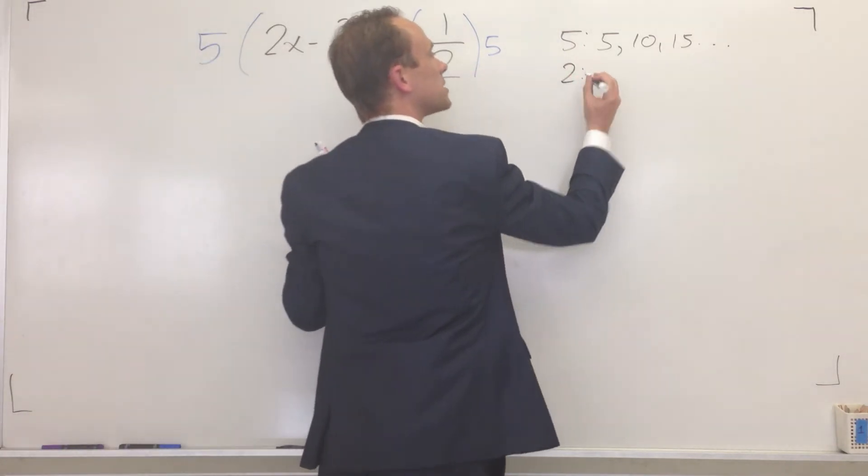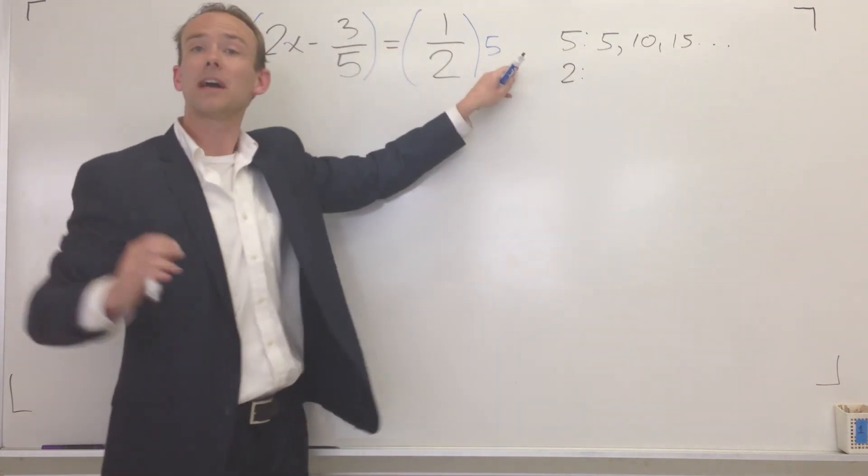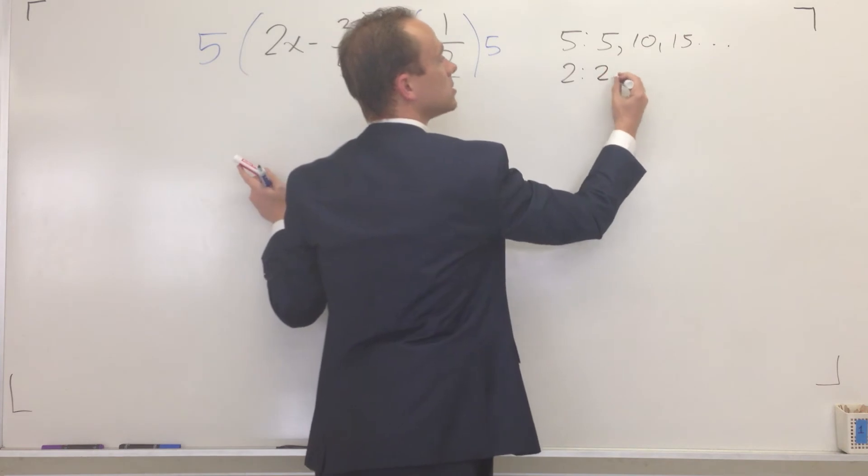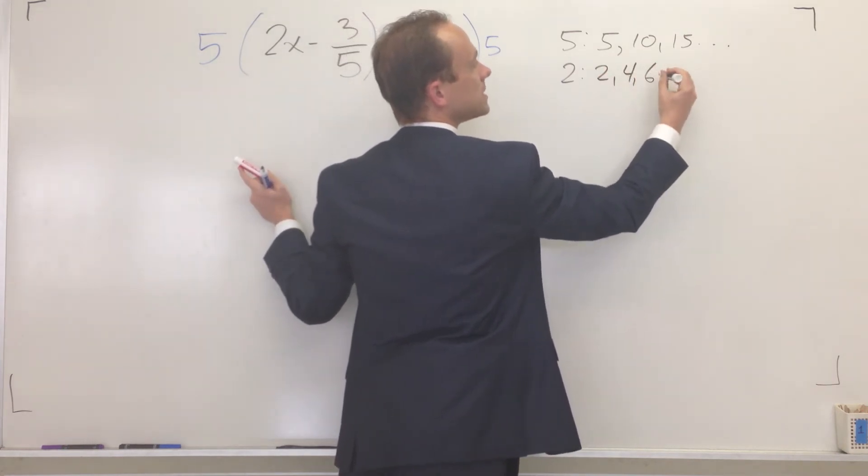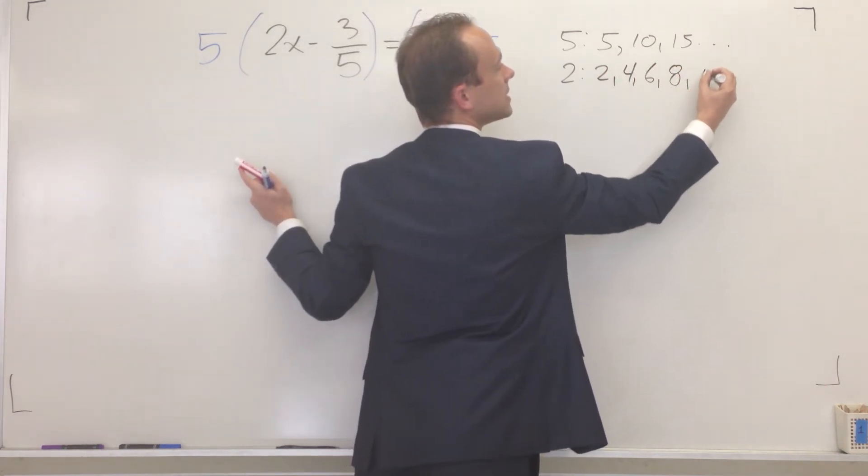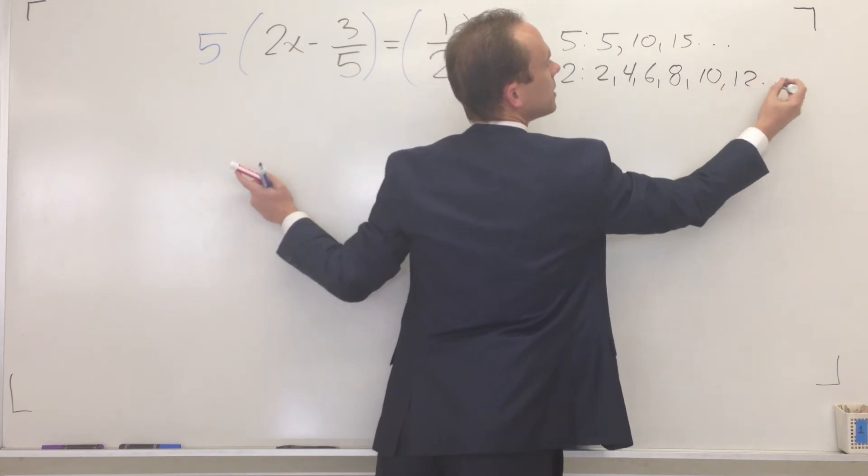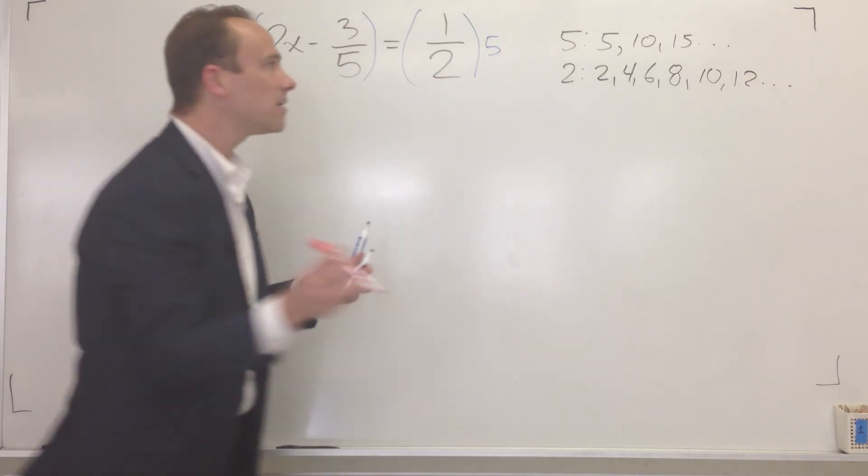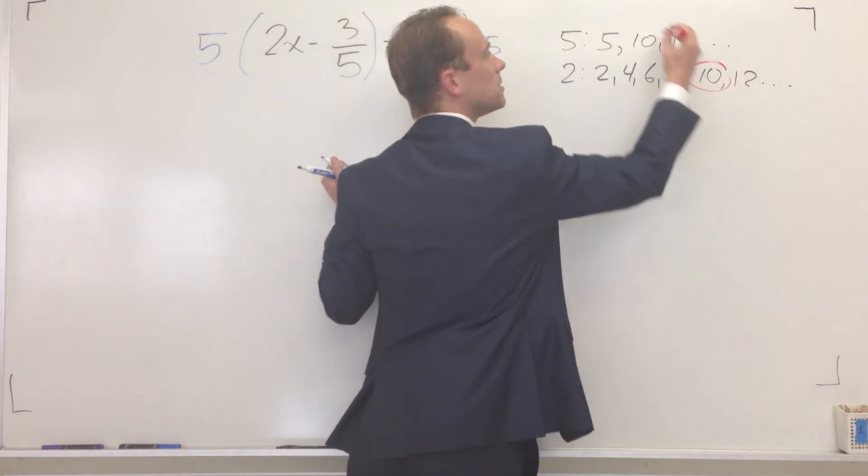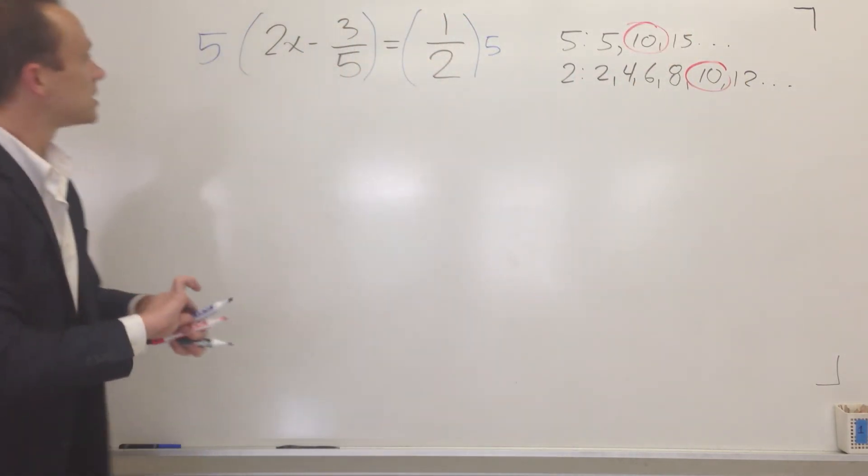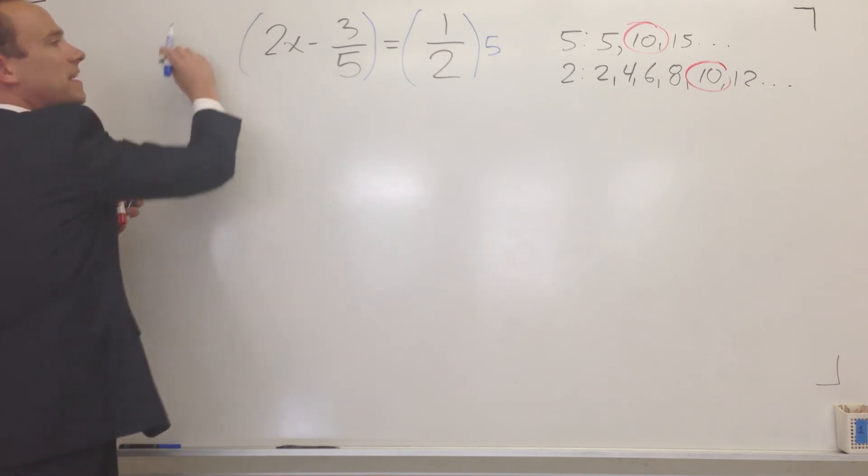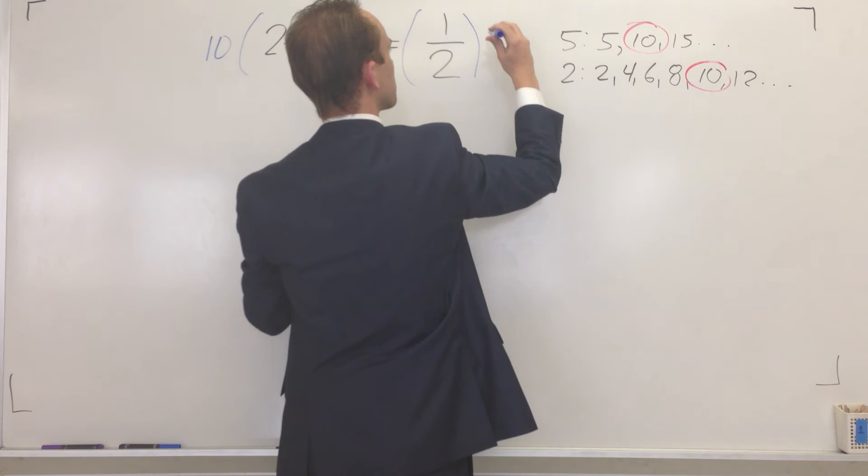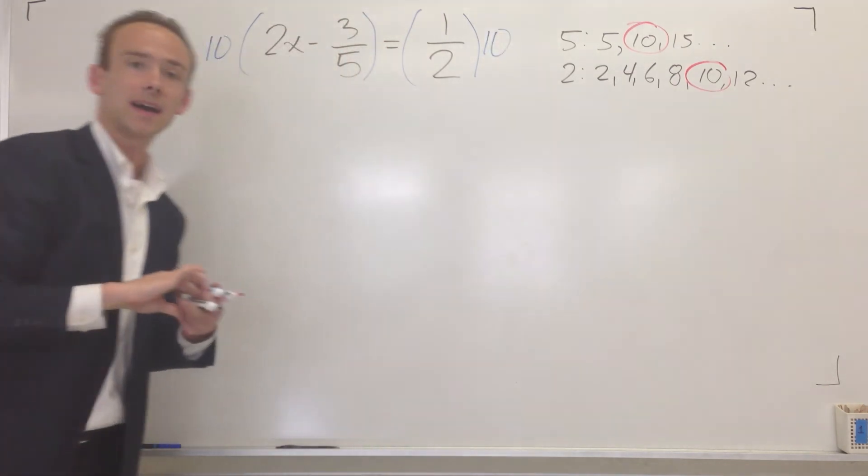So let's look at numbers that would actually take out the two. If you wanted to get rid of the two, you would just have to multiply it by something that goes evenly from two. So we got two, four, six, eight, ten, twelve. Now if you're lucky, if it works out, the same number will blow up both fractions. In this case, you multiply by ten.